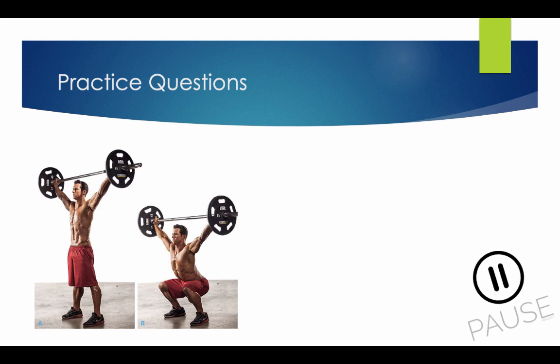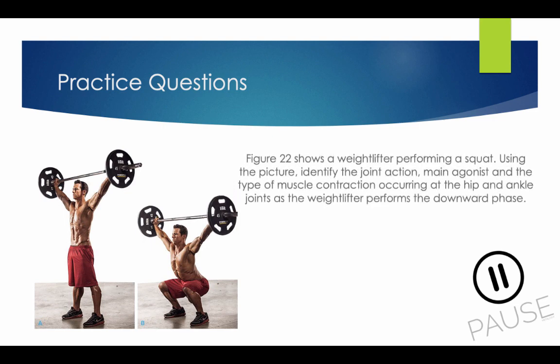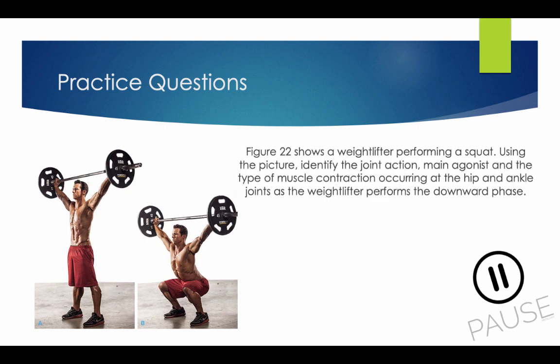Practice question — pause the video and answer these questions. Figure 22 shows a weight lifter performing a squat. Using the picture, identify the joint action, the main agonist, and the type of muscle contraction occurring at the hip and ankle joints as the weight lifter performs the downward phase of the squat.